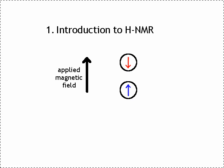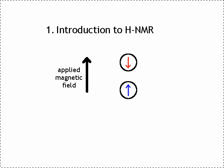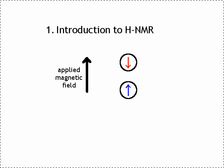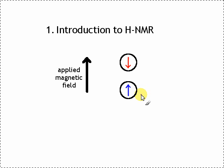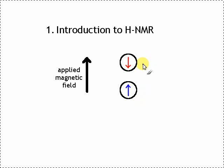And these two spin states have slightly different energy levels when placed in a magnetic field. If the spin aligns with an applied magnetic field, then they will have a slightly lower energy state. And if they align against it, then they'll have a slightly higher energy state.